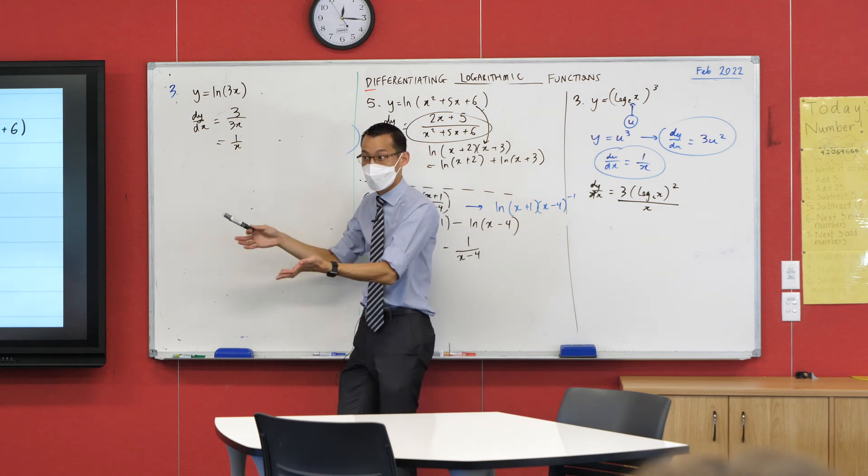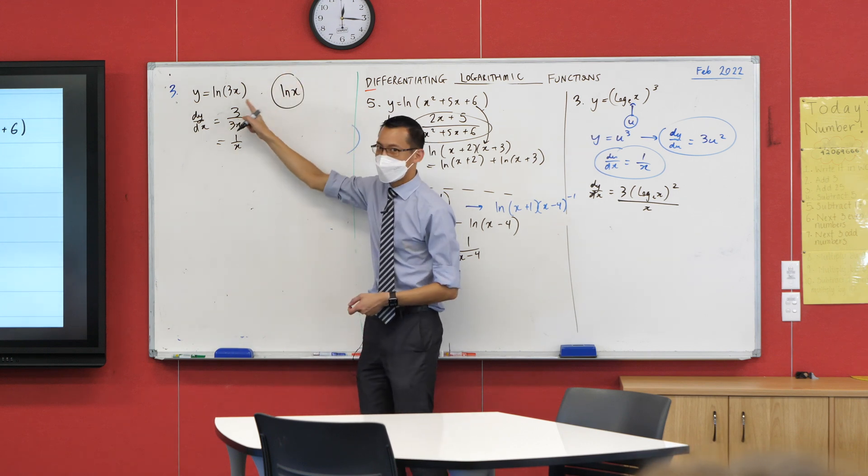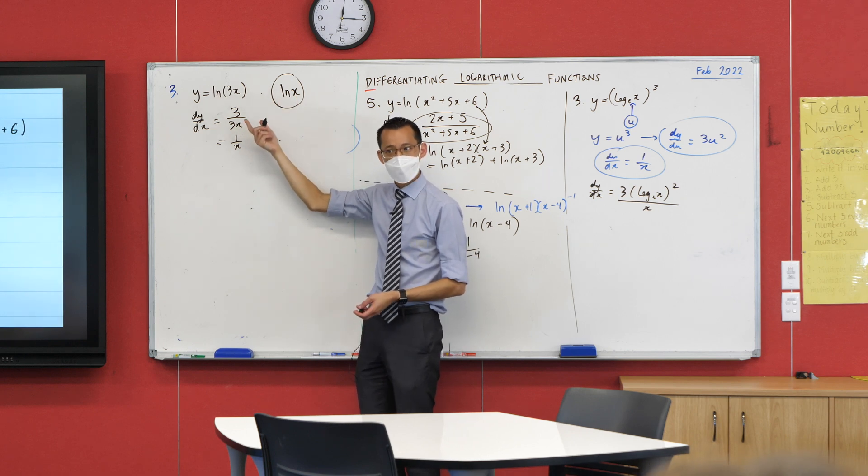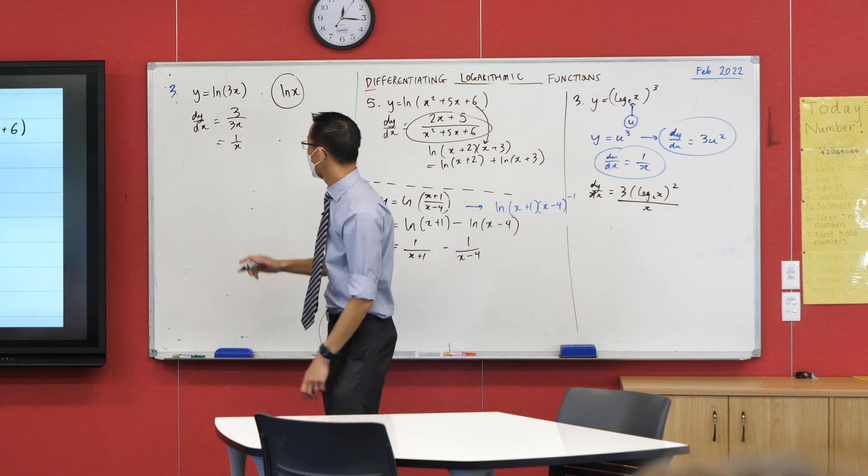We're going to see that actually they're not as different as you think. On Desmos, can I ask you to put both of these in for me? Graph log x—and if you type in ln it should do the job for you—and then put in ln of 3x.